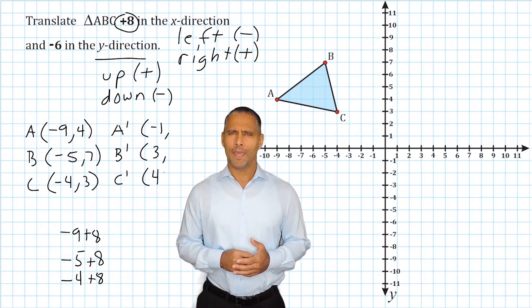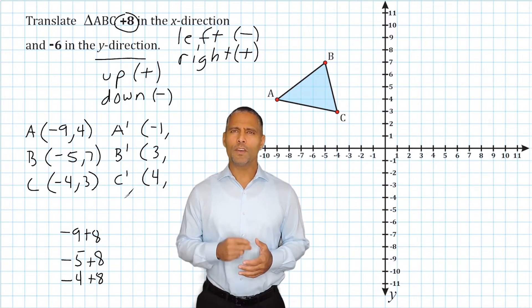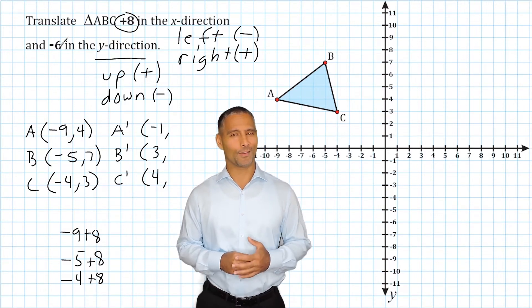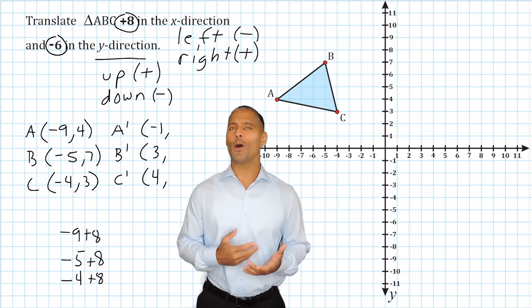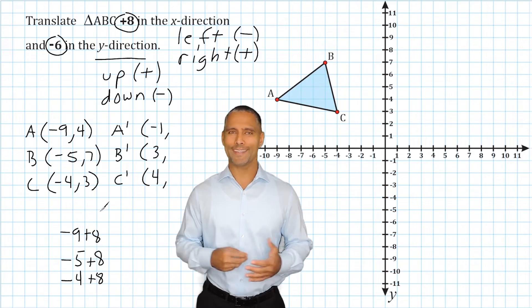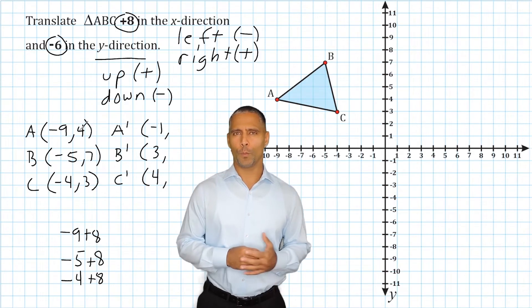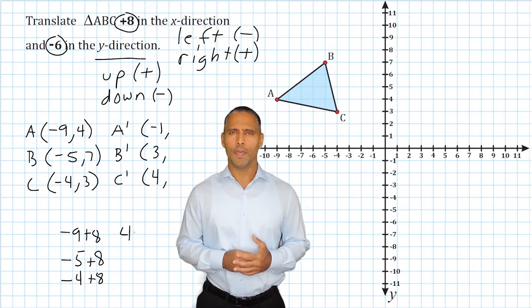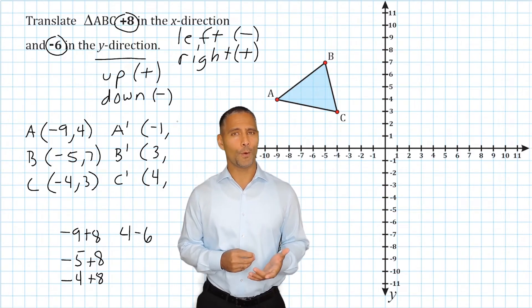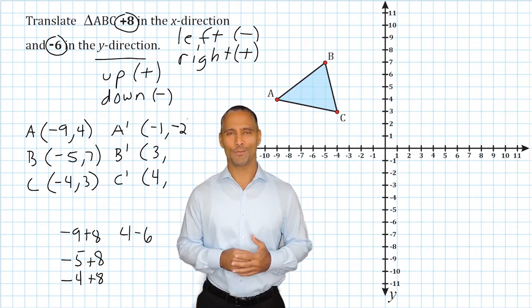Alright. Now let's determine our new y-values. Because we have to move our object negative 6 in the y-direction, we just take all of our y-values and subtract 6. So let's start with the y-value positive 4. If we take away 6 from positive 4, that leaves us with negative 2.